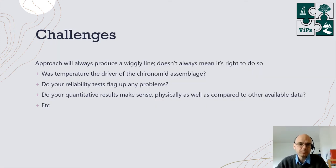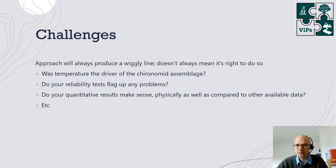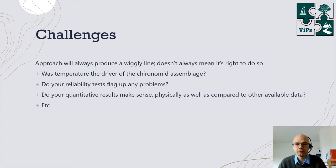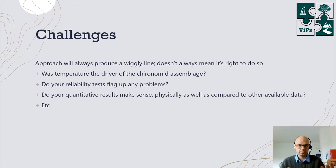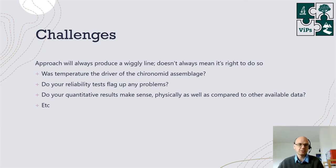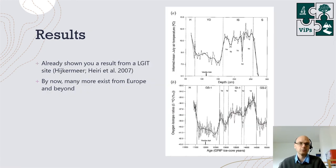Now there are certain challenges involved in this approach. The method will always produce a wiggly line, but it doesn't necessarily always produce one that's robust, reliable, or even realistic. Questions you always need to ask include: was temperature really the driver of the chironomid fauna composition through time? Do additional statistical tests flag up any problems? Do your quantitative results make sense when compared to other data, and are the numbers realistic? These are the kinds of questions you have to critically ask yourself even after completing your first set of tests.